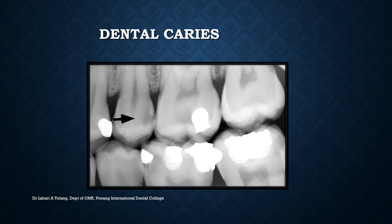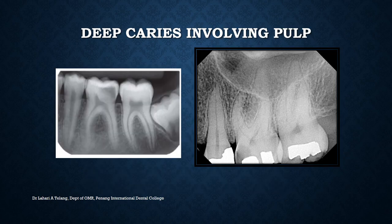Looking at dental caries — in this bitewing radiograph, on the proximal and distal surface of what is probably the left premolar or molar, you can see a radiolucency involving the enamel and dentine, which looks like dental caries. When looking at deep caries involving the pulp, it involves considerable enamel, dentine, and is very close to the pulp horn. The depth of caries and proximity to the pulp is how you analyze severity.